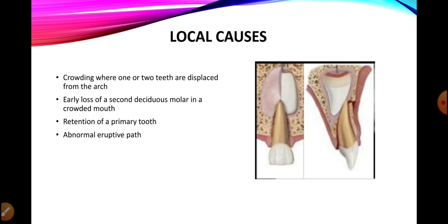When there is early loss of a second deciduous molar posteriorly, it may result in forward movement of the upper permanent first molar, leading to loss of space for the second permanent premolar, which may then erupt palatally or buccally and cause a crossbite. Local causes may also include retention of a primary tooth or presence of a supernumerary tooth, which can deflect a tooth from its normal eruptive pathway and cause a crossbite.